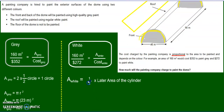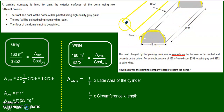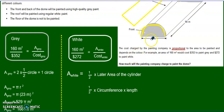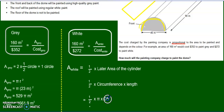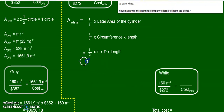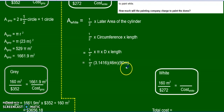The lateral area of a cylinder is circumference times the length. Since we only have half a cylinder, we want half of it. So it's one half times π times the diameter times the length. The diameter is 46 meters and the length is 90 meters. That gives you 6,503 meters squared for the area of the white.